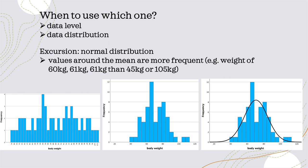The distances between values are not correct, so grouping them together makes more sense. Another important thing: if we have continuous values and had not rounded the body weight, it is very likely that every patient would have a slightly different value.